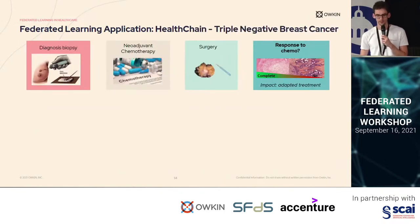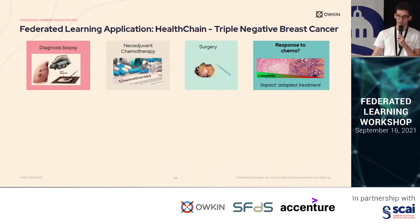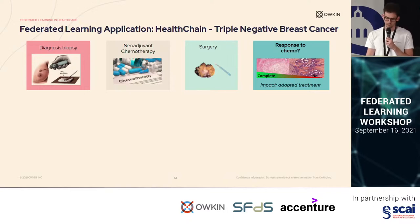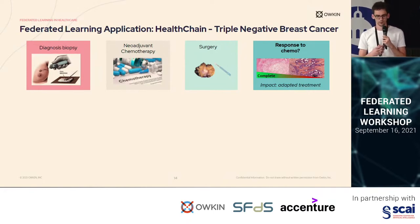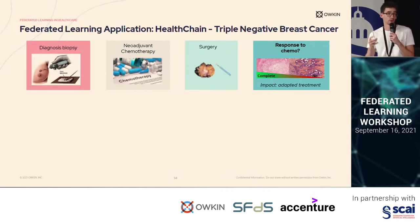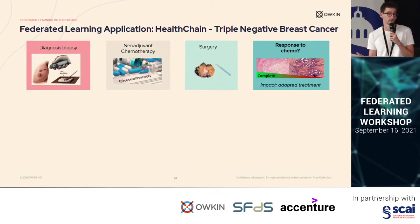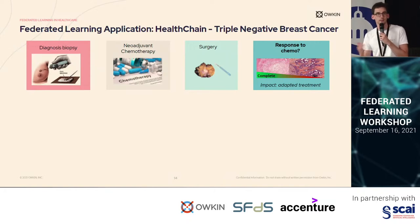Another application that is ongoing is HealthChain, in particular for triple-negative breast cancer. Triple-negative breast cancer is a kind of rare cancer affecting mostly women. For this cancer, most patients undergo, following diagnosis, a neoadjuvant chemotherapy to reduce the size of the tumor, and then surgery to remove the tumor. Unfortunately, in some cases patients have not responded to the chemotherapy, only realizing at surgery that the response was either complete or not complete. This is a pity because patients undergo a very toxic chemotherapy and may not respond.